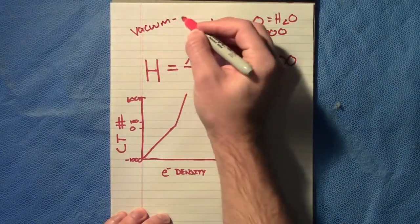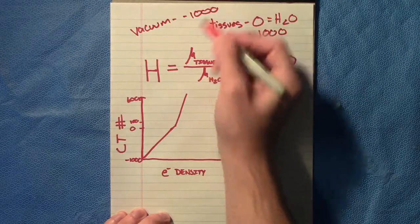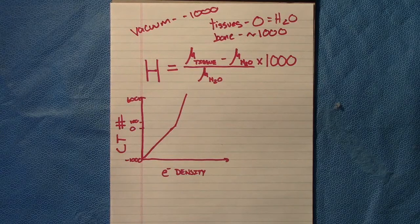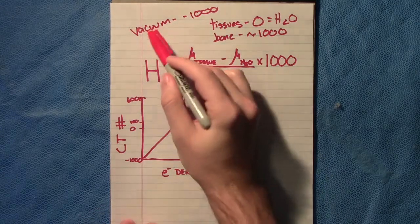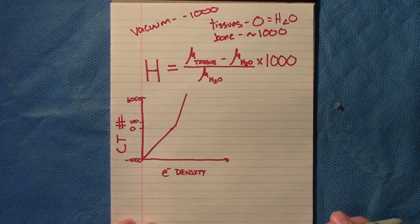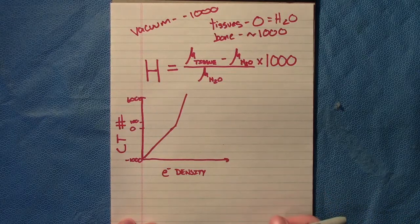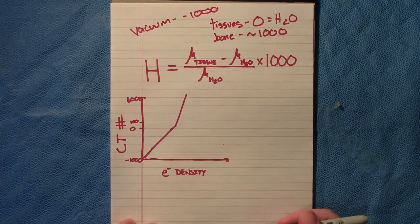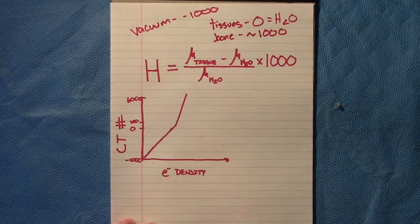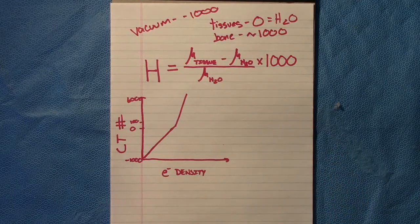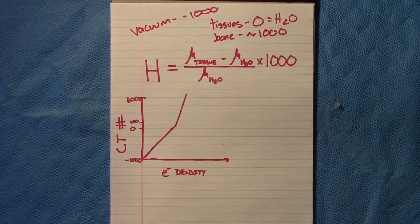Obviously when you're looking at soft tissues in the body, lung is going to have a lower value because it's more like vacuum, more like air than water or tissue, so it's going to have a negative Hounsfield unit. Something more dense, maybe like a liver, isn't exactly going to be zero, it's going to be a little more, and then bone obviously will be the highest.